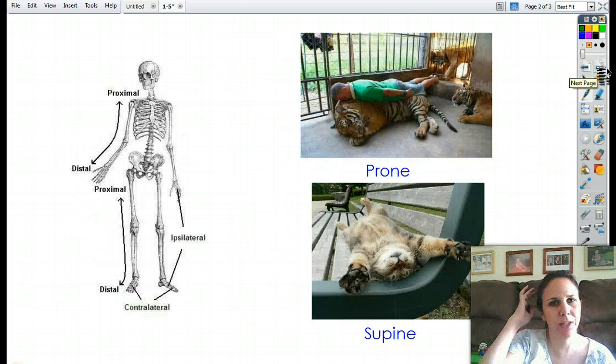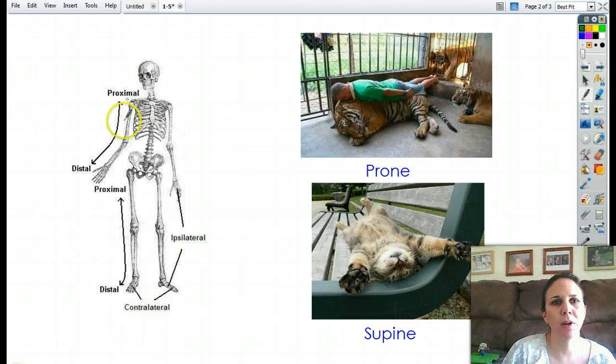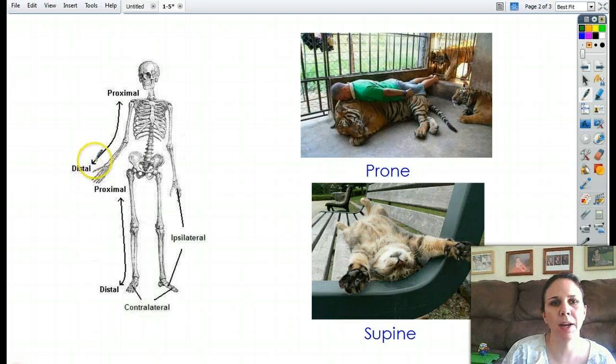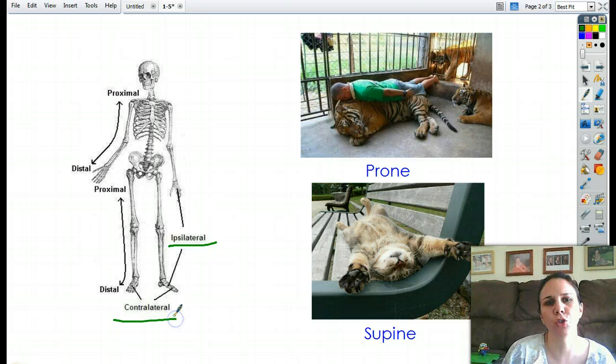Okay. Now on the next page, we have a couple other terms. We already talked about proximal and distal. Proximal closer to the body. Distal away from the body. But now we have ipsilateral and contralateral.